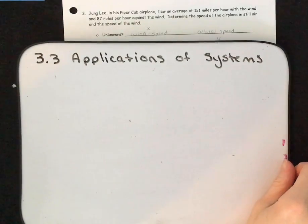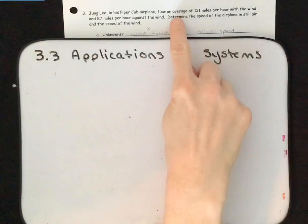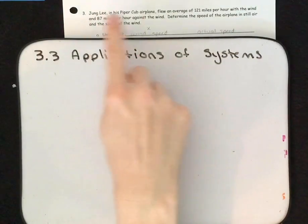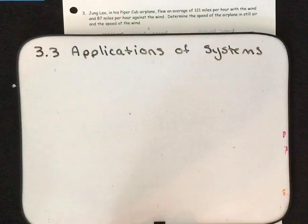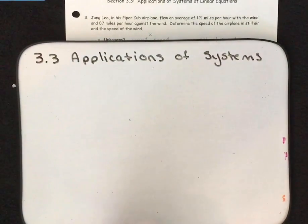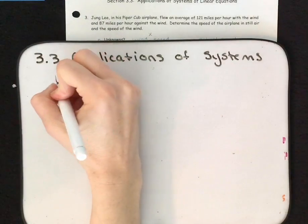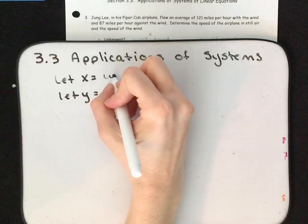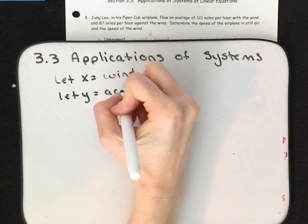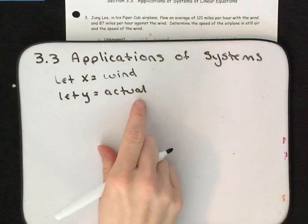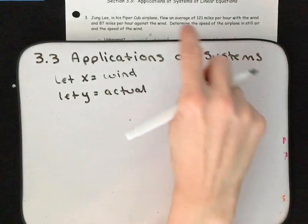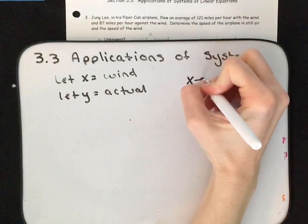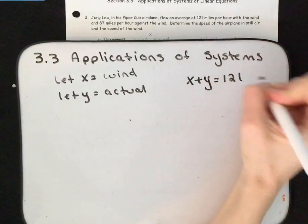Number 3. Dongli and his Piper airplane flew an average of 121 miles per hour with the wind and 87 miles per hour against the wind. Determine the speed of the airplane in still air and the speed of the wind. Those are the two things we're looking for, so let X equal the speed of the wind and let Y equal the actual speed of the airplane without wind. It says flew 121 miles per hour with the wind, so the speed of the plane plus the speed of the wind equals 121: X plus Y equals 121.